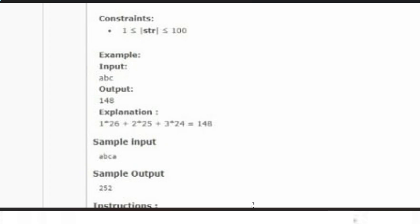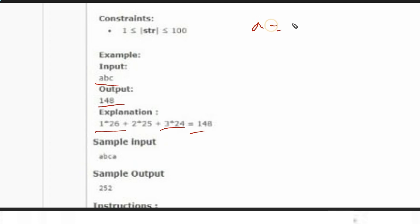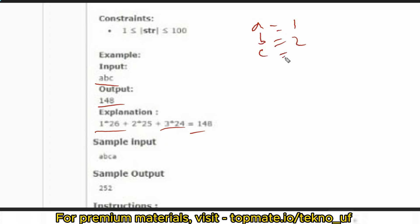Due to copyright issues I have not shown the full question, but this much of the question portion will be enough. The input format is 'abc' and the output is 148. Basically, what you have to do is reverse the alphabetical order. For 'a' the place value is 1, for 'b' it's 2, for 'c' it's 3, up to 'z' which is 26.